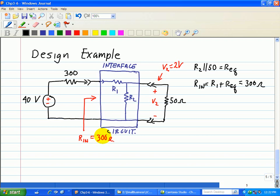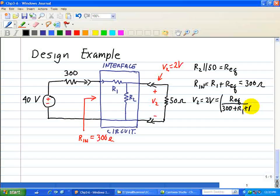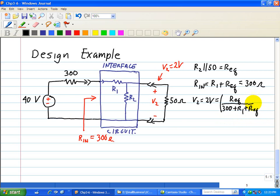Now at the output port, we need the constraint to be 2 volts, so V2 is equal to 2 volts. And we take a look at that, and we just simply see a voltage divider such that REQ is the equivalent resistance right here. So that's our REQ all over the sum of these resistances, 300 plus R1, 300 plus R1 plus REQ, all that multiplied by 40. And that should equal 2 volts across the 50 ohm resistor or V2.